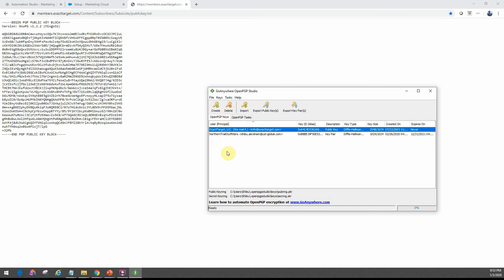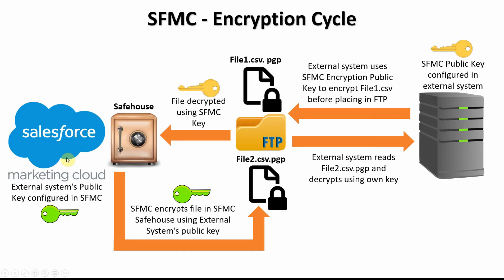Now let's look at the outbound flow. Going back to our diagram, you can see that in order for Marketing Cloud to send a file out, the safe house needs to be able to encrypt that particular file. Let's say I have a CSV file I want to encrypt before sending it out to the enhanced FTP. In this case, we cannot use the Marketing Cloud public key because external systems don't have the passphrase to decrypt it — that's only internal to Marketing Cloud. So we need to use the specific public key of the external system, which they provide to us.